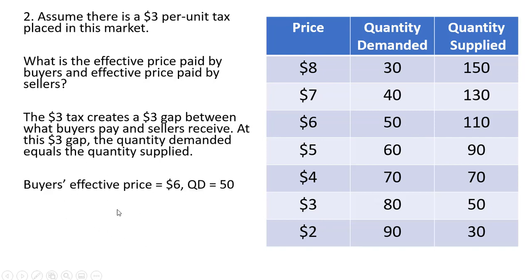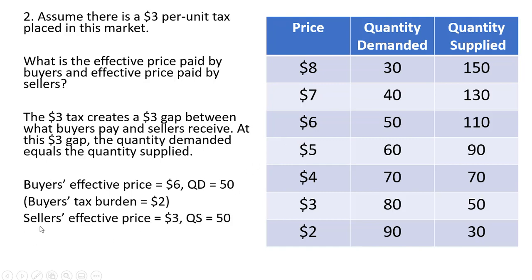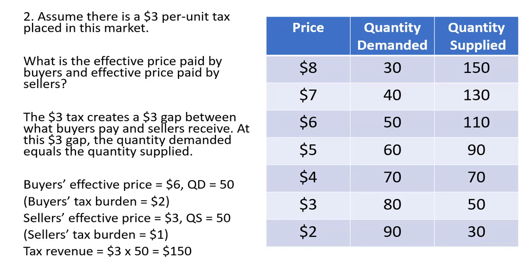The buyer's effective price is $6, with a $2 tax burden — the equilibrium price was $4 and buyers are now paying $2 more. The seller's effective price is $3, bringing 50 units to market. The seller's tax burden is $1 — sellers at one time were receiving $4 per unit and now are receiving an effective price of $3 per unit, a $1 difference. For tax revenue, 50 units are being taxed at $3 each, giving $150 in tax revenue. I hope you found this video helpful.